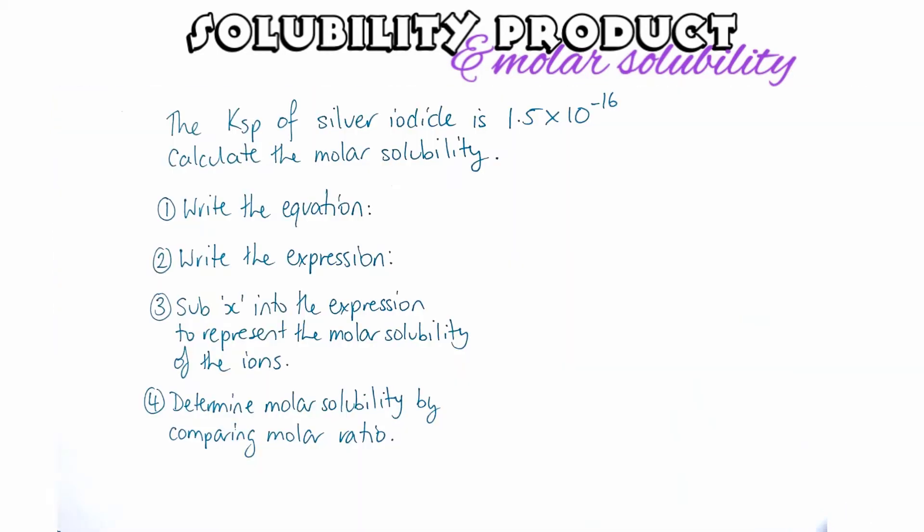Okay, so now we're looking at the opposite. We're looking at an example now where we're being asked to calculate solubility from the Ksp. In this example, it says that the Ksp of silver iodide is 1.5 times 10 to the minus 16. Calculate the molar solubility.